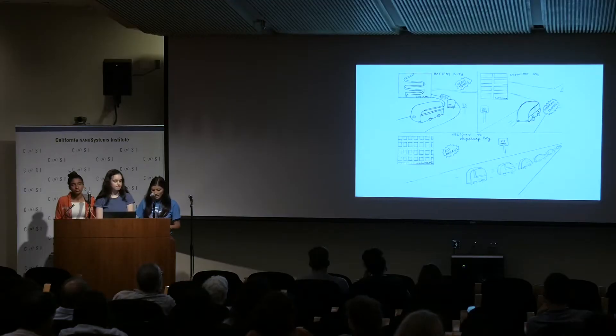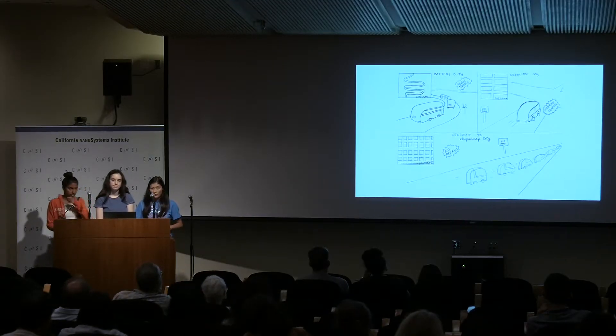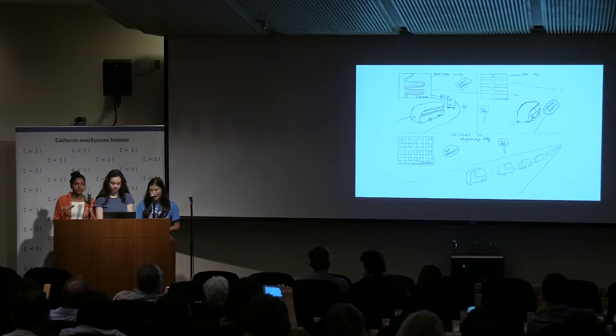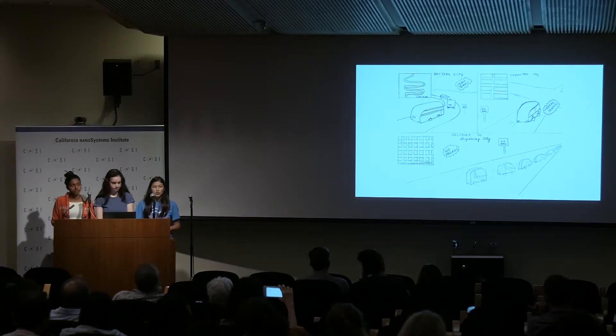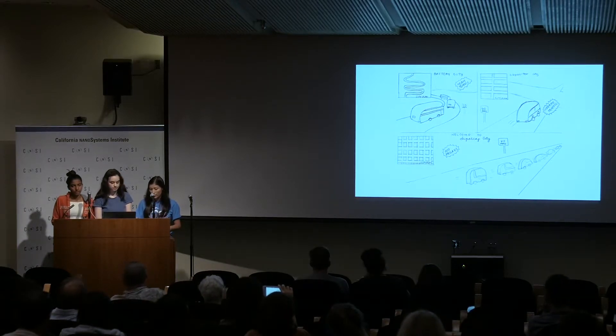So we all know the problem with solar and wind energy is that it's really hard to store. We use most electricity during the night, but the sun is obviously out during the day when we're not using as much electricity. So the solution would be to find a very efficient way to store all that energy. Batteries have low power but very high energy, capacitors have high power but low energy, and supercapacitors have medium-to-high power but medium energy.